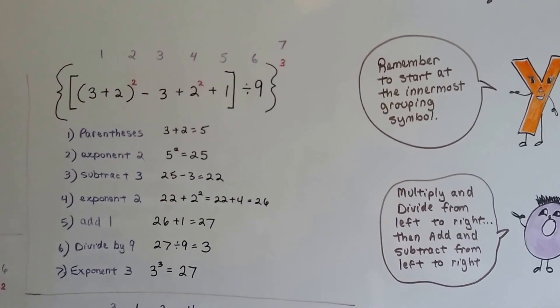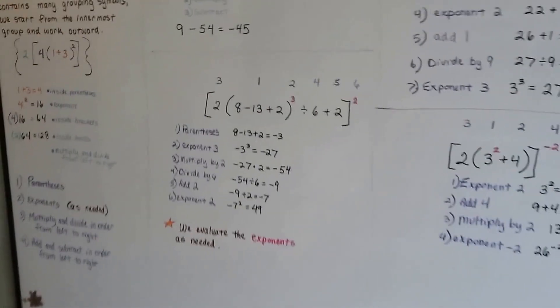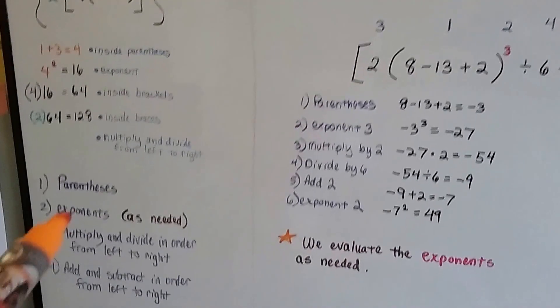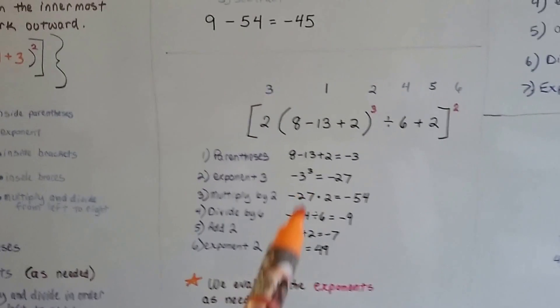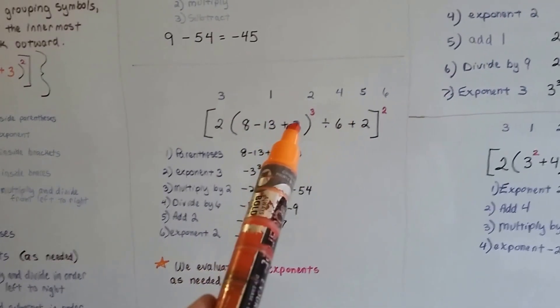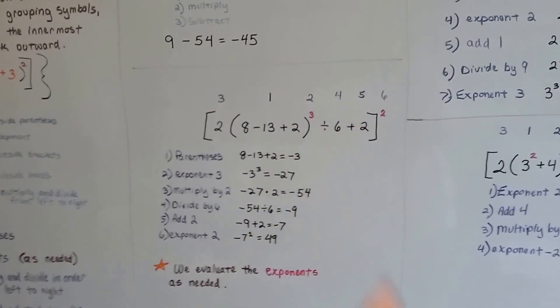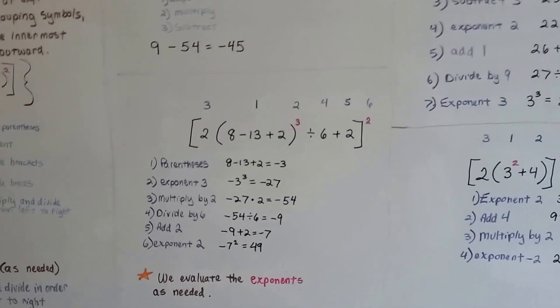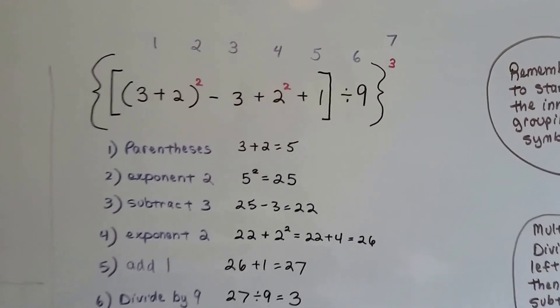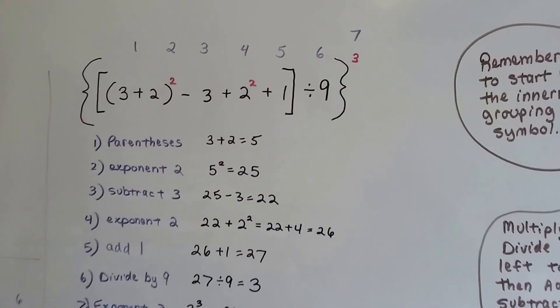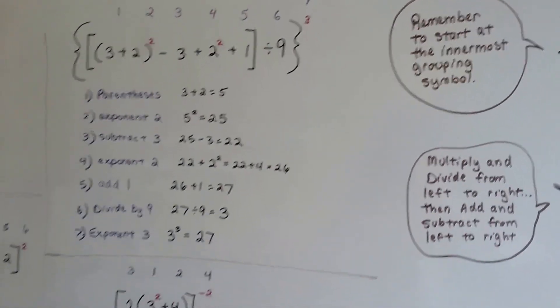Just because the old order of operations you learned from grade school said that exponents were second, doesn't mean that we have to do all those exponents second. We may have to do other operations first because of the brackets and the braces and the parentheses. So it makes it very different, doesn't it? Start from the inside. Work your way out.